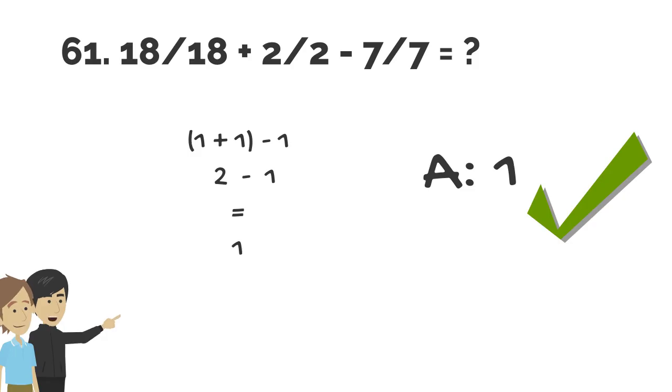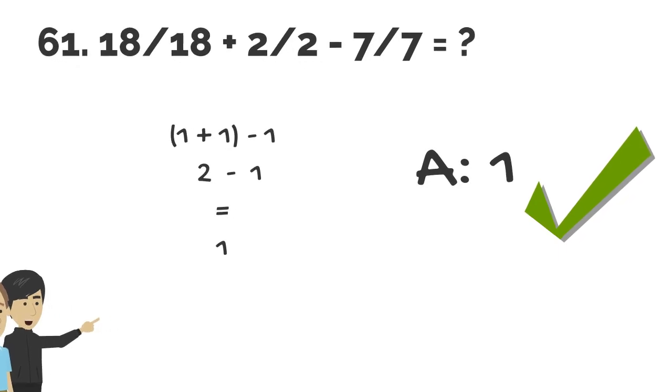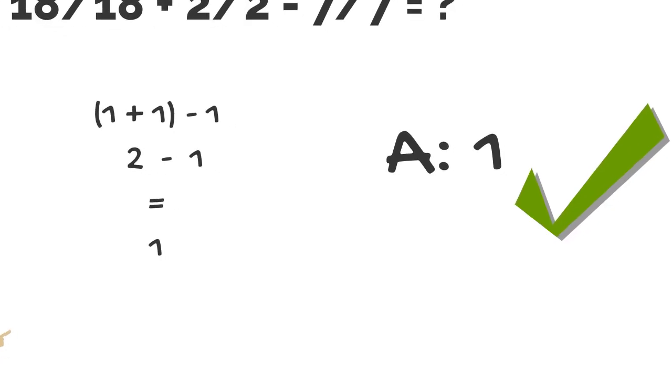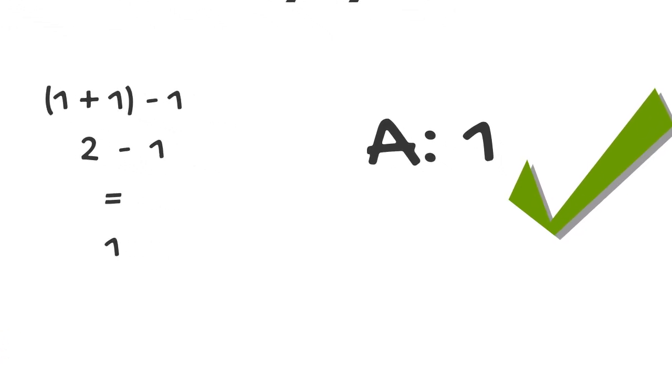And one more thing here. Instead of getting 18 plus 2 is 20, and 20 minus 7 is 13, you simply figured out 18 over 18 is 1, 2 over 2 is 1, and 7 over 7 is 1, and everything was easier that way. You outclassed the class.